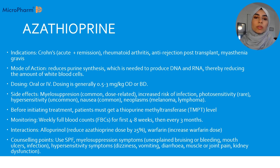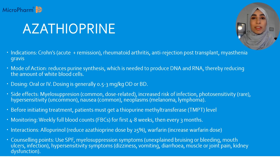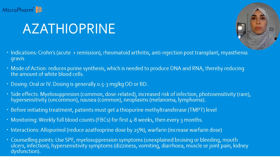For dosing, we give oral or IV, and dosing is generally between 0.5 to 3 mg per kg, either once or twice a day. There are quite a few important side effects. Myelosuppression is a big one — common and potentially severe. It's also dose-related. Myelosuppression, also known as bone marrow suppression, is where certain blood cells reduce in count below normal levels. This includes neutropenia, which is low neutrophils, and thrombocytopenia, which is low platelets. We need to make sure patients are aware of the red flag signs to spot this.